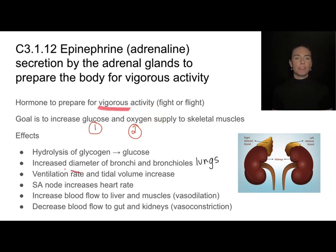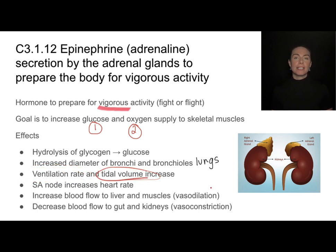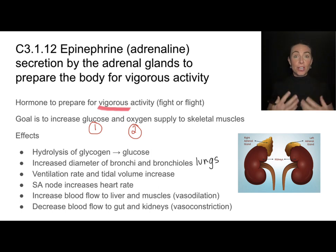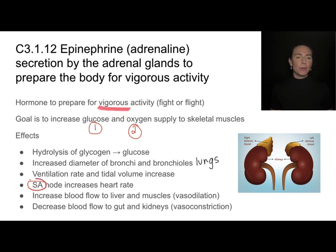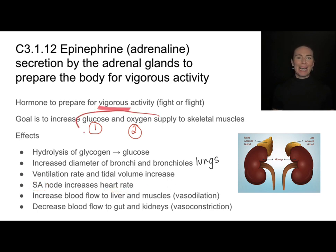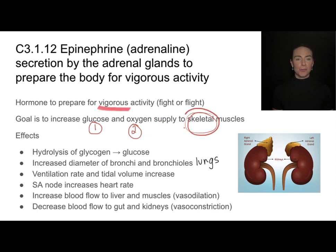Ventilation rate — how often we're breathing — will also increase, along with tidal volume, which is the volume of air we're getting into our lungs. Both of those increase to supply more oxygen. The SA node, which is the pacemaker of our heart, will also increase heart rate. That's important because we need to get glucose and oxygen delivered via our blood to our skeletal muscles.